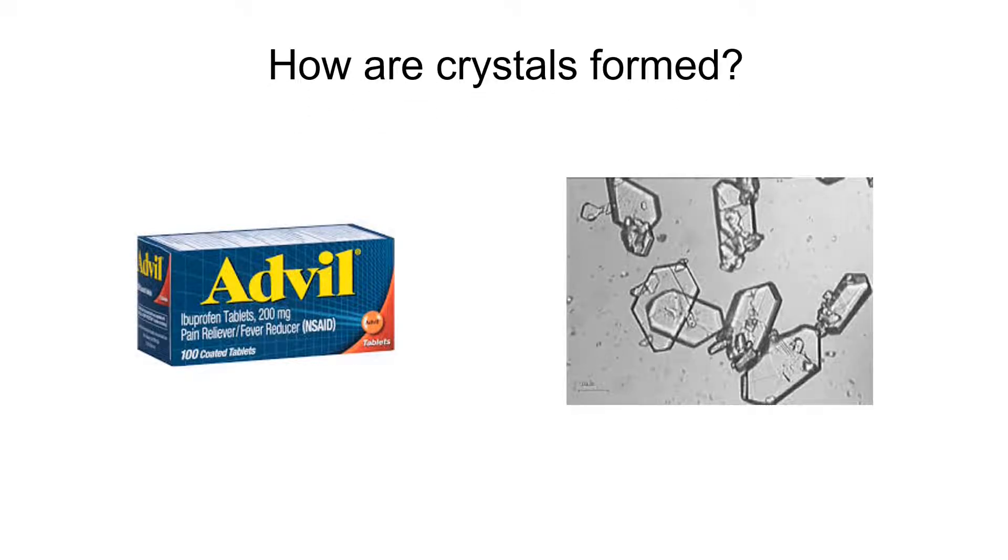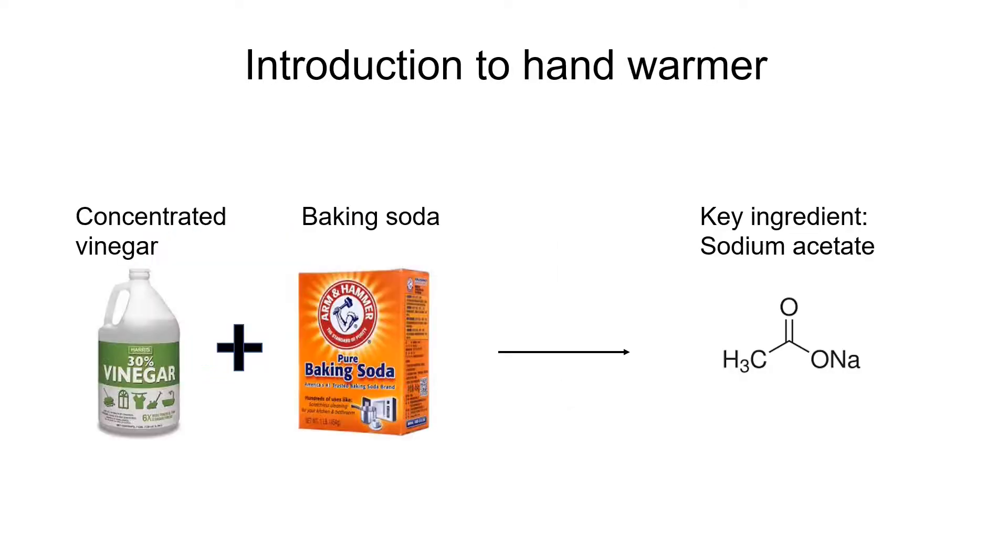In this video, we are going to use a hand warmer to demonstrate how crystals are formed through nucleation and growth. This hand warmer uses crystallization to release heat. The key ingredient is sodium acetate, which can be obtained by mixing vinegar with baking soda.